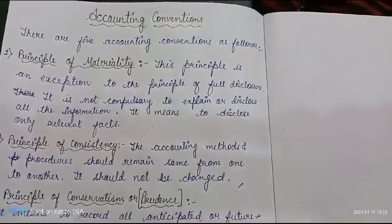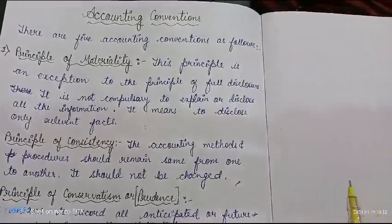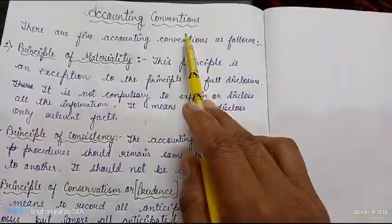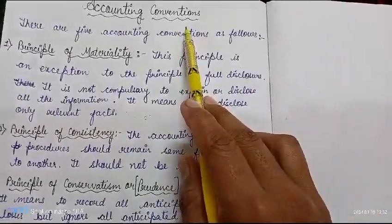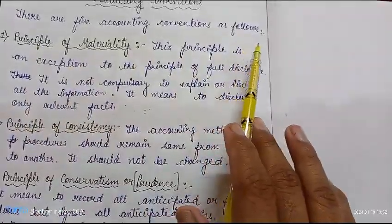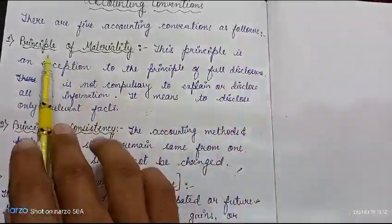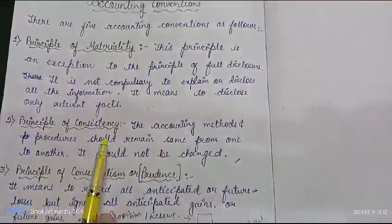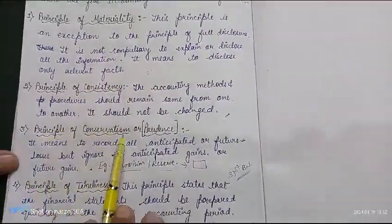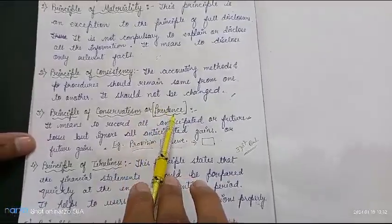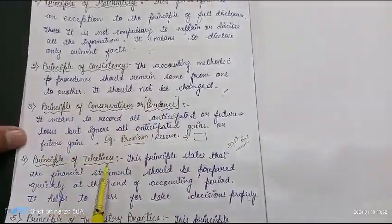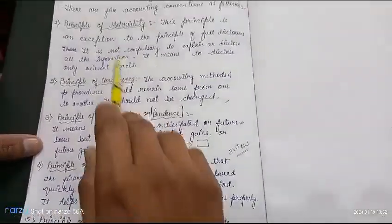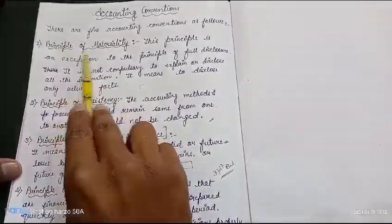Hello friends, welcome to my channel. In this video I will discuss about accounting conventions. There are five accounting conventions: first, principle of materiality; second, principle of consistency; third, principle of conservatism or prudence; fourth, principle of timeliness; and fifth, principle of industry practice.